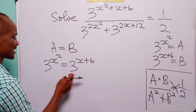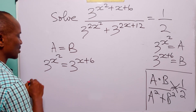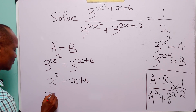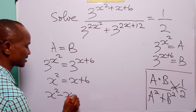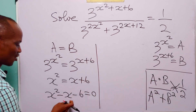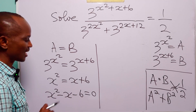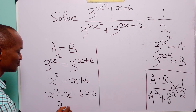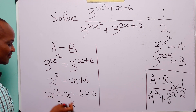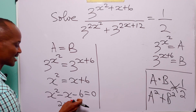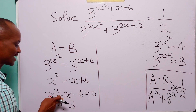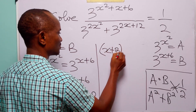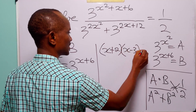Since these two numbers have the same base, we can equate the exponents. So x squared is equal to x plus 6. Rearranging, we have x squared minus x minus 6 is equal to 0. We can solve this quadratic equation by factorization. All we have to do is find the factors of minus 6 that add up to minus 1. The factors of 6 are 2 and 3. Since this is negative, the larger number has to be negative: 2 times minus 3 is minus 6, and 2 minus 3 is minus 1. So this quadratic factors as x plus 2 multiplied by x minus 3, equal to 0.